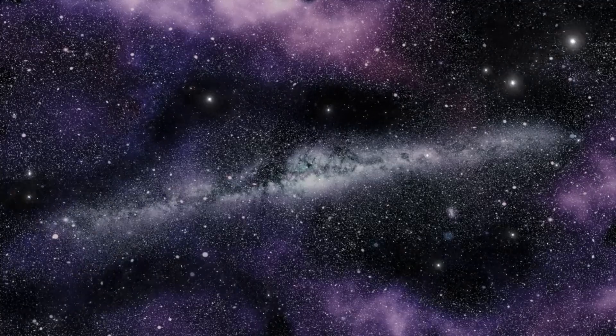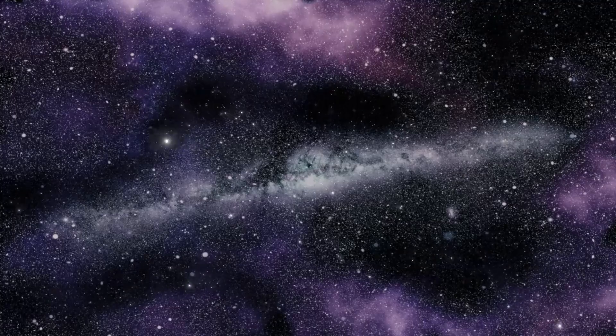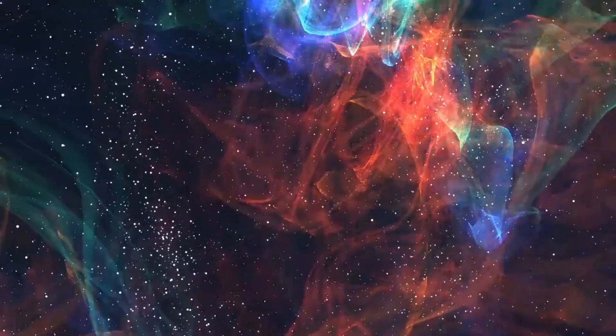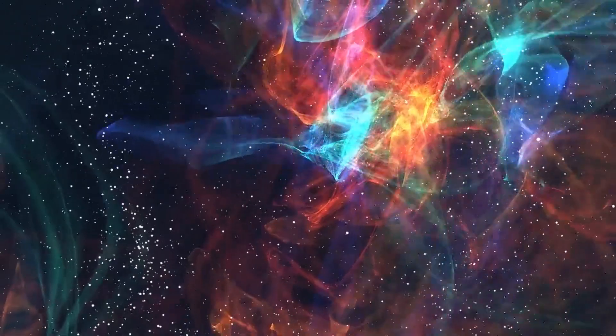The researchers named the giant structure Alcyoneus, after the son of Ouranos, the Greek primordial god of the sky.